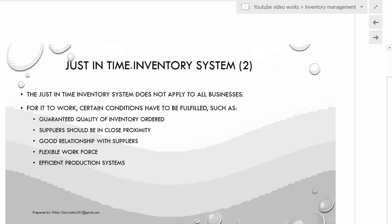The just-in-time system aims to reduce or even eliminate inventory holding at every stage of production, thereby improving profitability through reduced holding costs, while ensuring a continuous and efficient flow of inventory. For JIT to work, certain conditions must be fulfilled: guaranteed quality of goods ordered, suppliers must be in close proximity, a good relationship with suppliers ensuring orders arrive on time within the expected lead time, a flexible workforce, and efficient production systems.